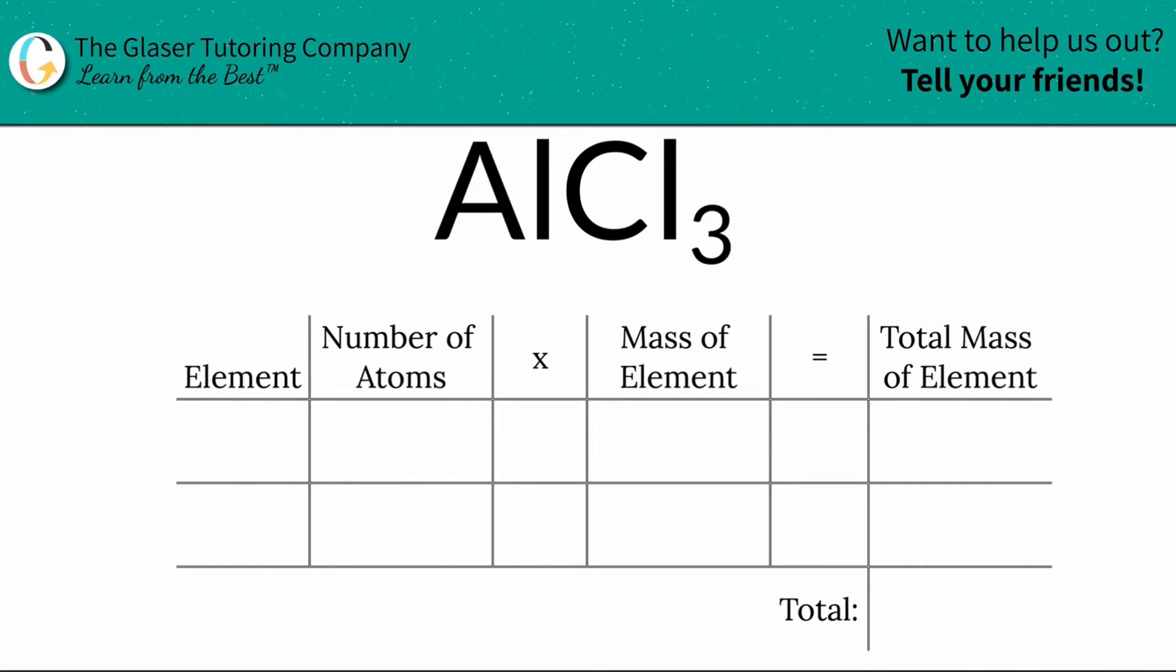Simply we're going to plug in the elements that we see in the compound. So I see aluminum and I see chlorine. Next thing is I'm going to look at the number of atoms I have in each element. That's where the subscripts come into play.